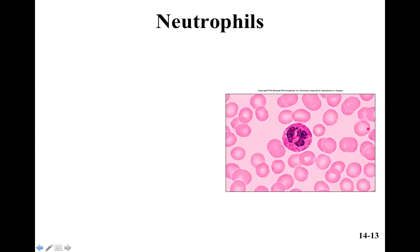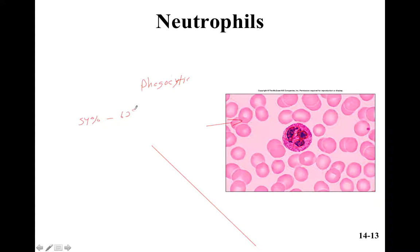Neutrophils look like they have lobed nuclei — the nuclei form different lobes. These are the first ones to arrive at an infection, especially bacterial infections. They're phagocytic, so they devour those bacterial cells. Neutrophils make up the largest portion of our leukocytes, commonly cited as 54 to 62 percent. If you have a bacterial infection and your neutrophil count is at 75 or 69 percent, they'll suspect a bacterial infection.